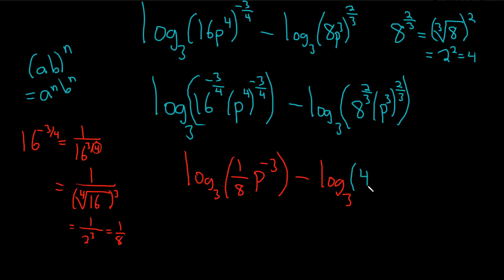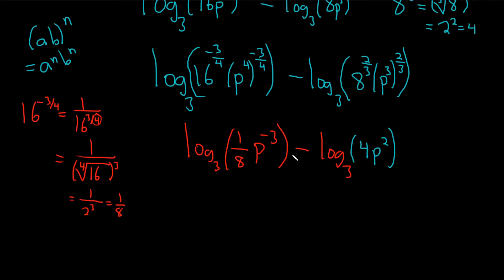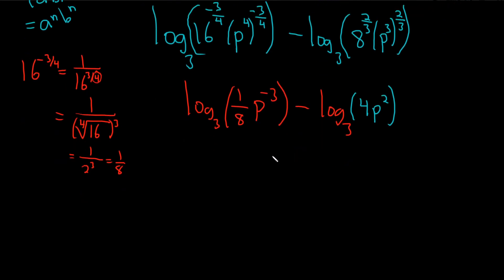So this will be 4. Then, same thing here. 2 thirds times 3, the 3s cancel, so you get P squared. All right. That wasn't so bad. Pretty tough though, right? Pretty tough for a problem. This is like pre-calc level. This is not just basic algebra level. This is actually from a pre-calc book, I think.